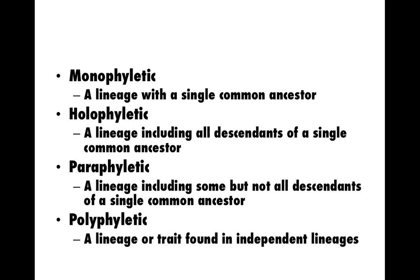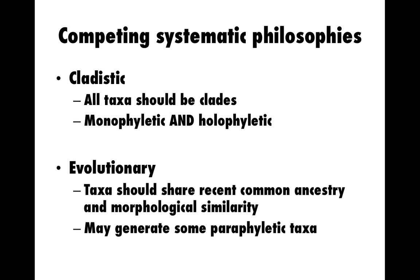Polyphyletic refers to a lineage or a trait that's found in many independent lineages. For systematic philosophies, historically we've used an evolutionary philosophy. The rules for the evolutionary philosophy of systematics are that taxa should share recent common ancestry, and we expect some morphological similarity to unite those taxa. When we do this, we may get some paraphyletic taxa. The cladistic philosophy suggests that all taxa should be clades, meaning that all taxa should be both monophyletic and holophyletic.